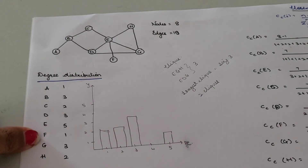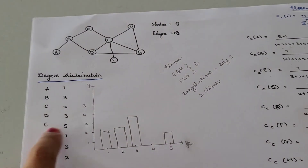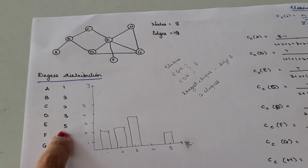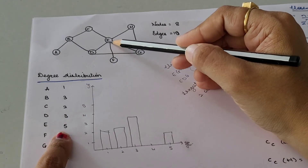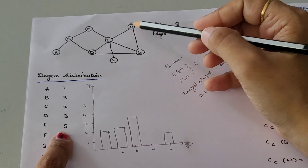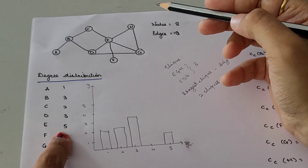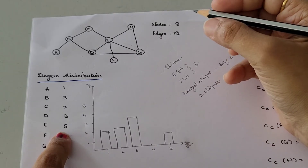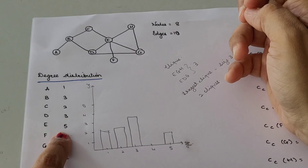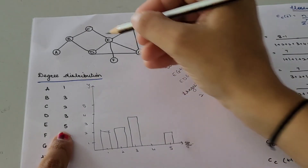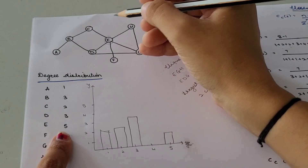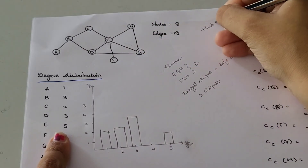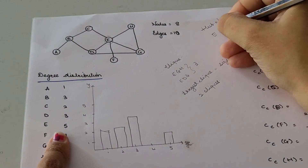Based on degree distribution, you can see that node E has the maximum degree. It is called a hub because it has many nodes connected to it — D, C, H, F, G are all connected to node E. It allows the creation of paths to reach all points in the network. That is why node E is called the hub of this network.